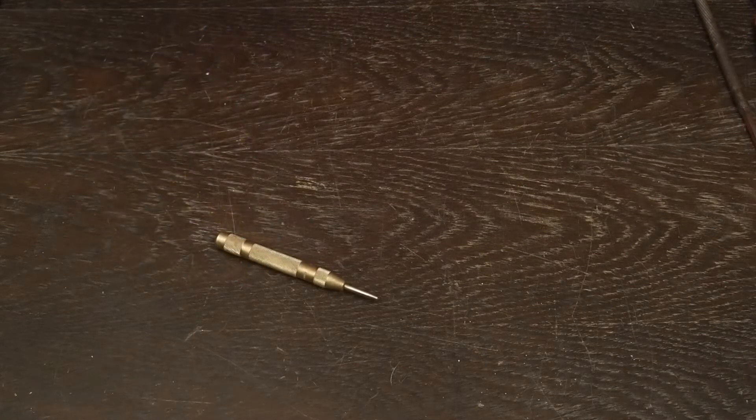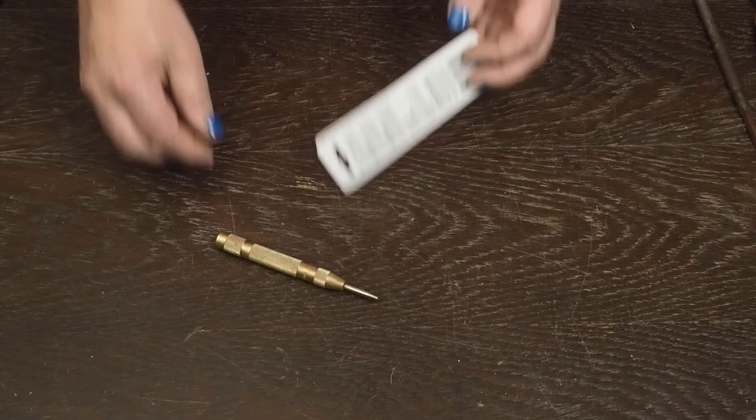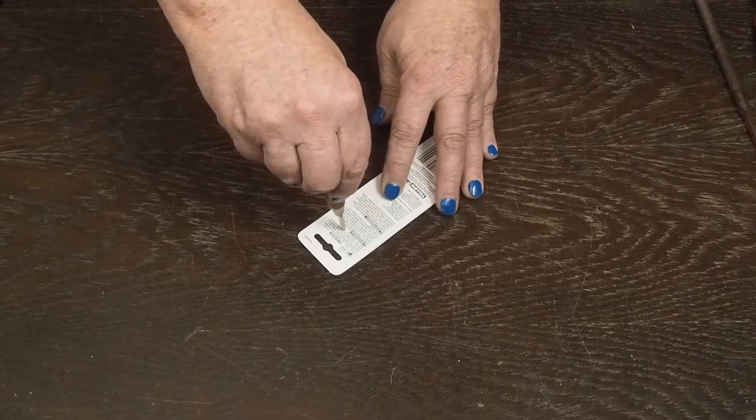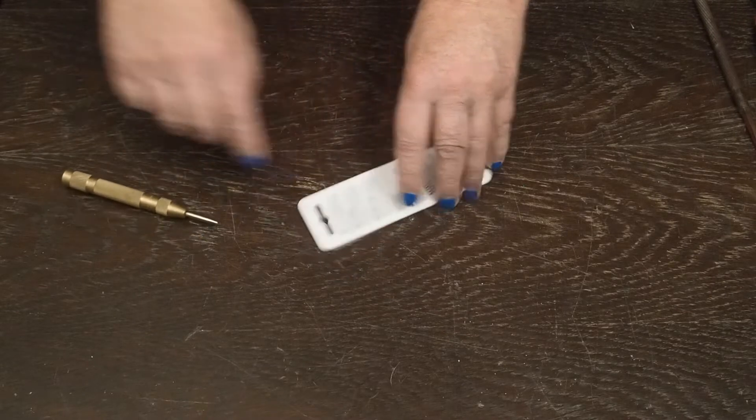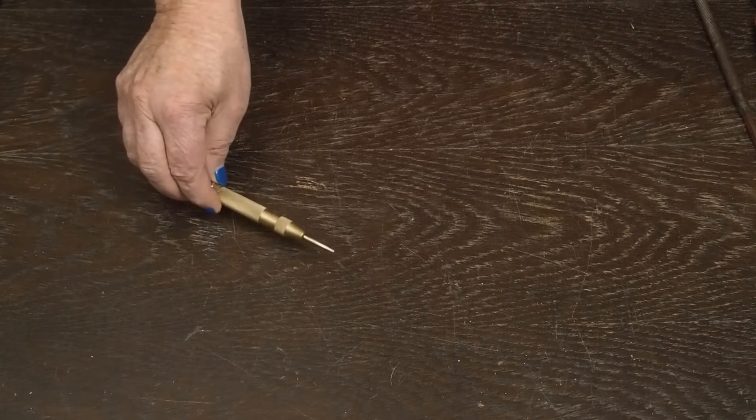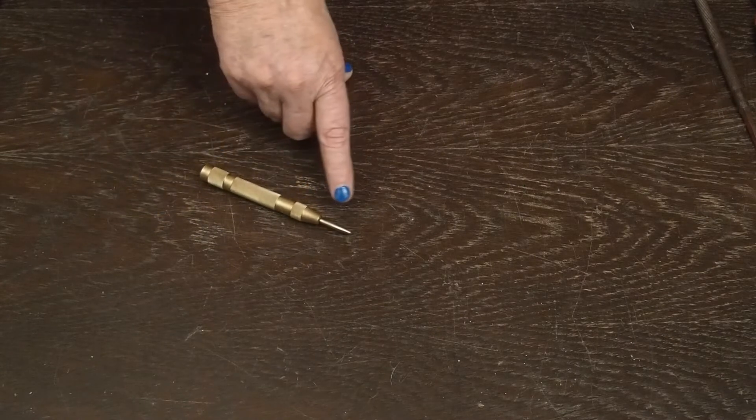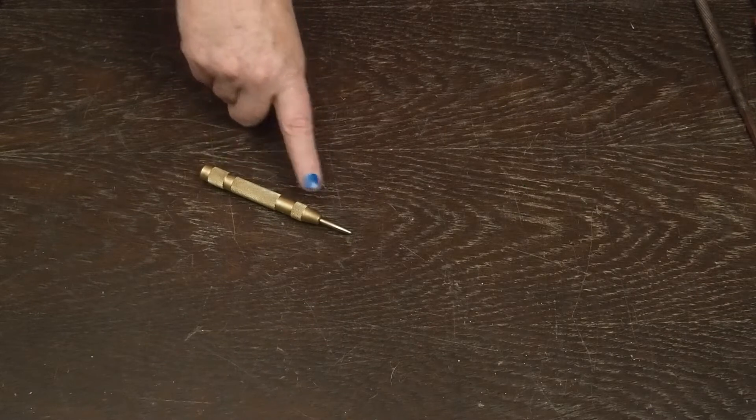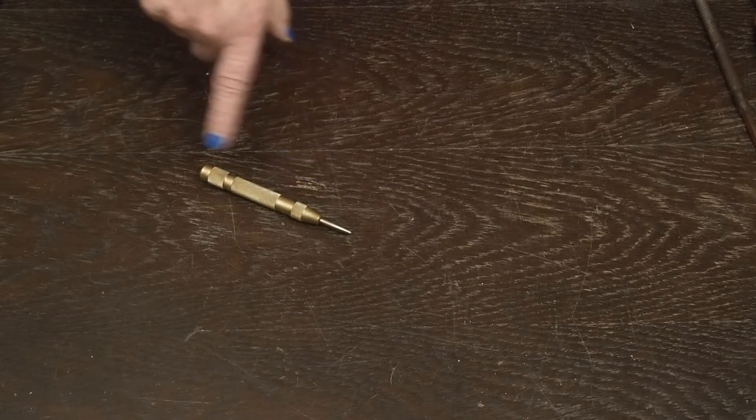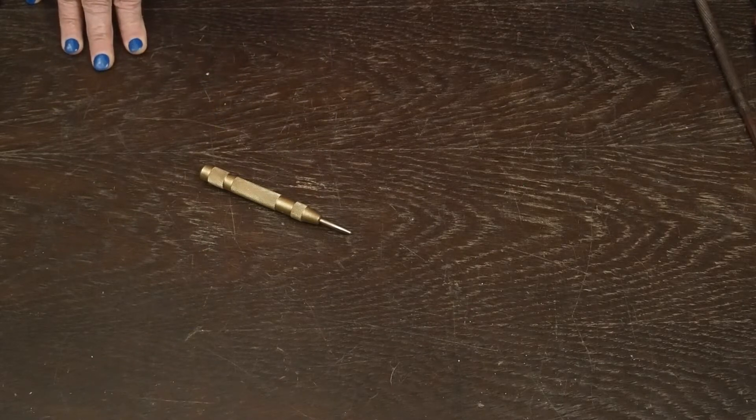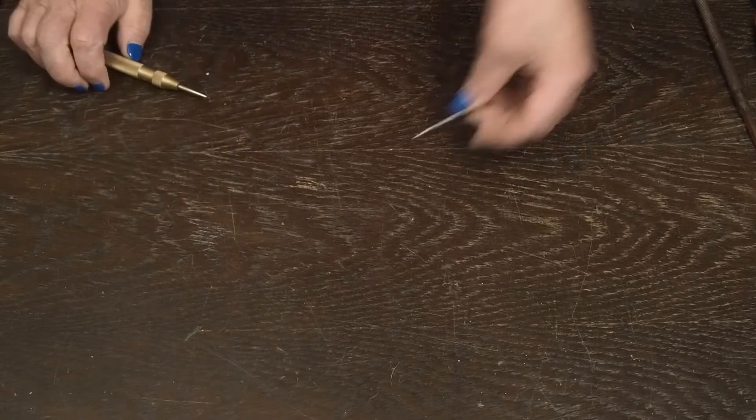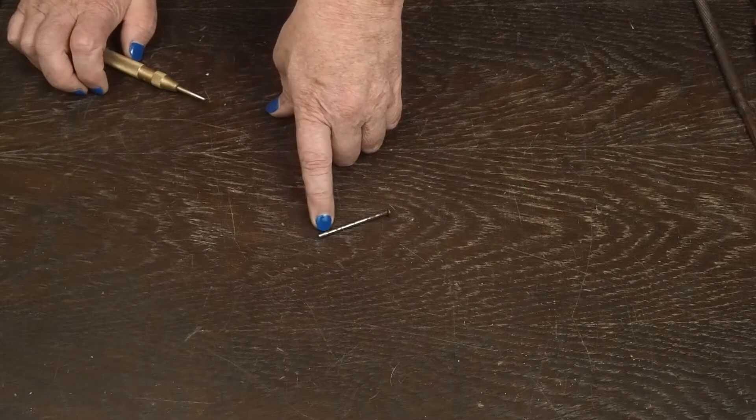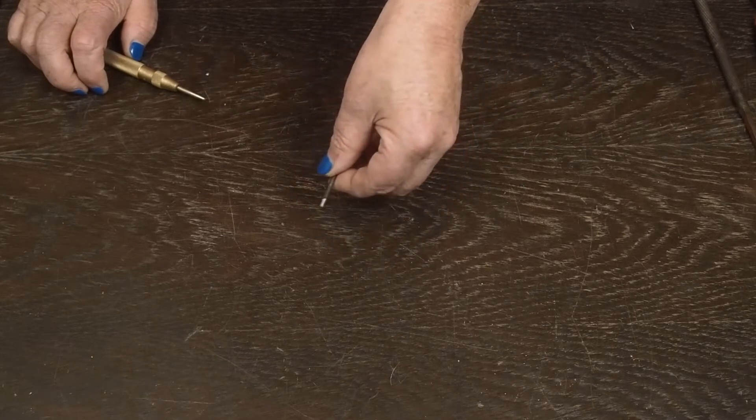The next thing you're going to need is a center punch. There's a couple of different kinds. This is an automatic one. The way these work is you locate the hole, and when you push down, it goes and it marks the center for you. And you don't need a hammer. If you don't have one of these, they also make manual ones that you just tap the end of it with a hammer. Sometimes I end up losing this thing and I've just used a nail with the end of it sharpened. You just need to put a little dimple right where we're going to be drilling the hole.